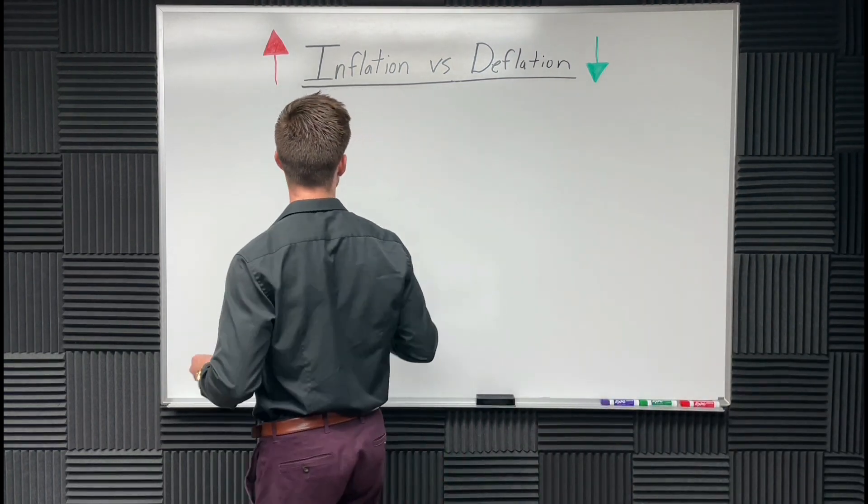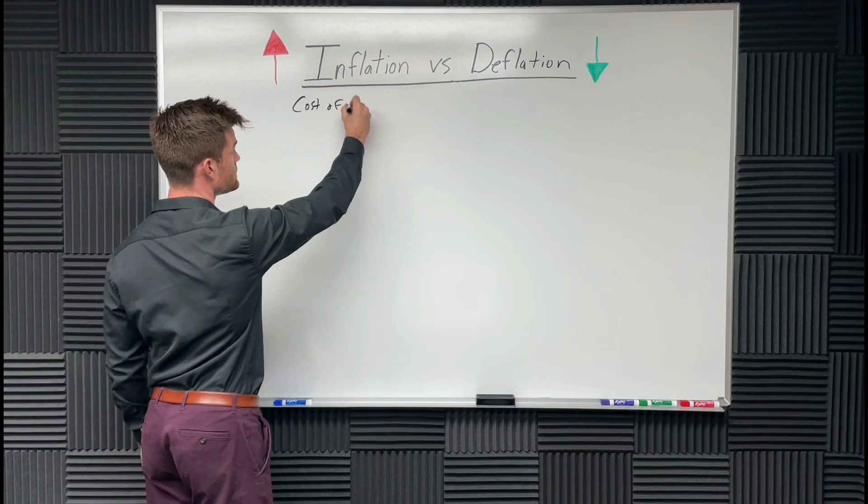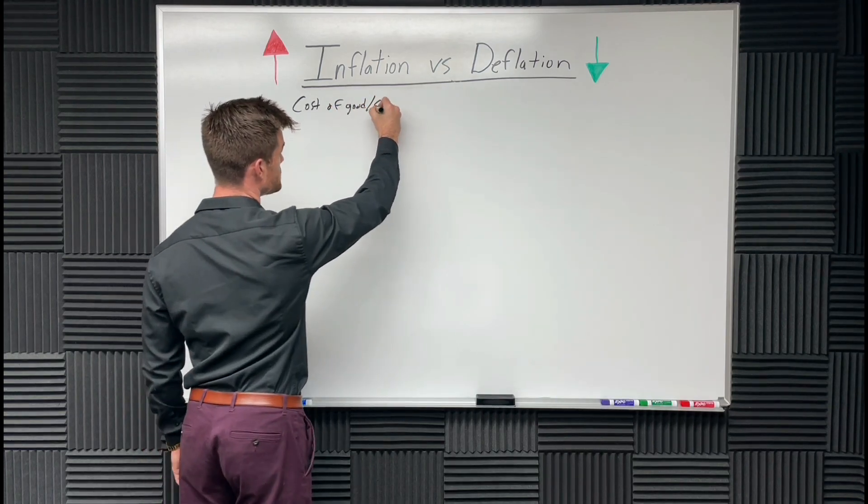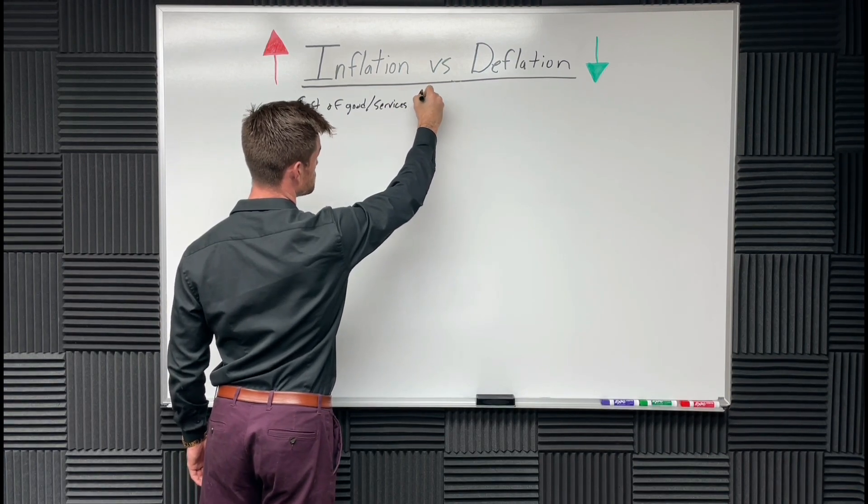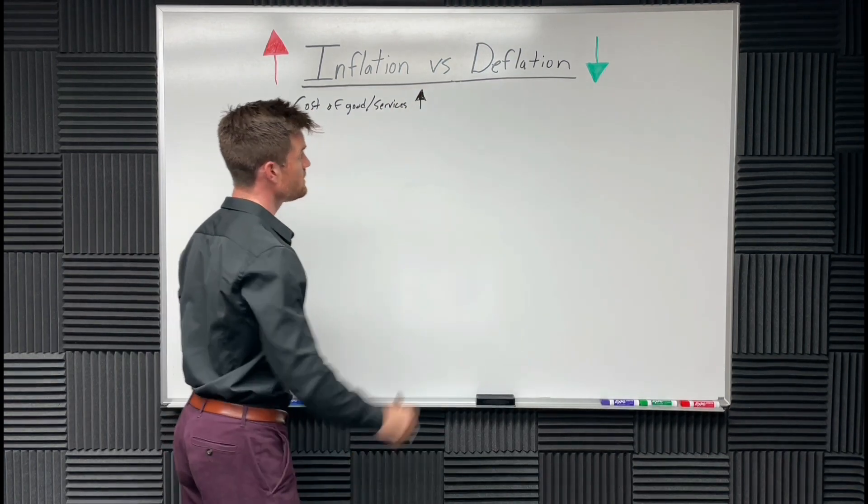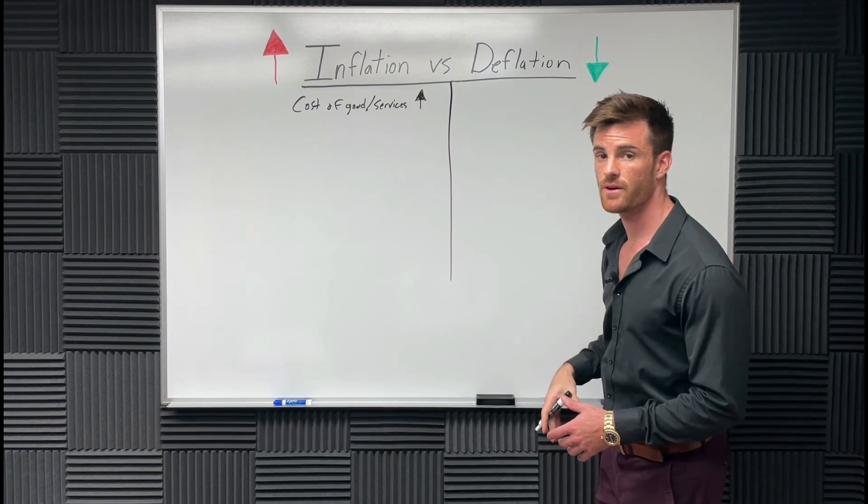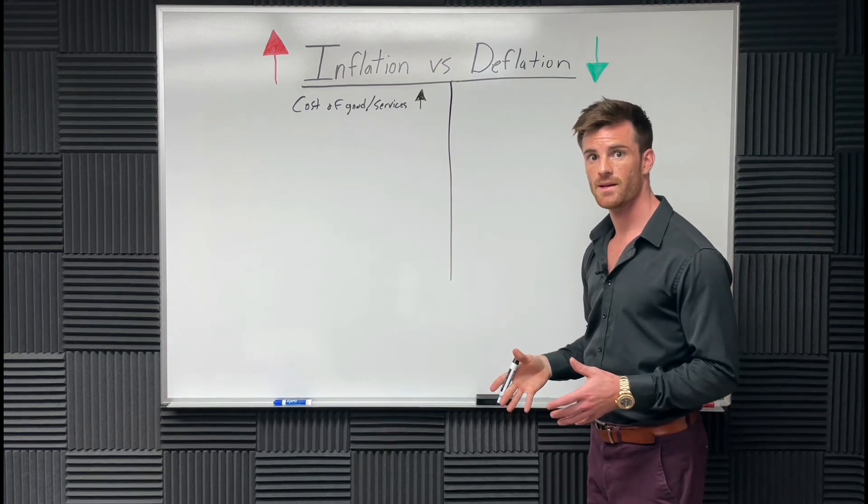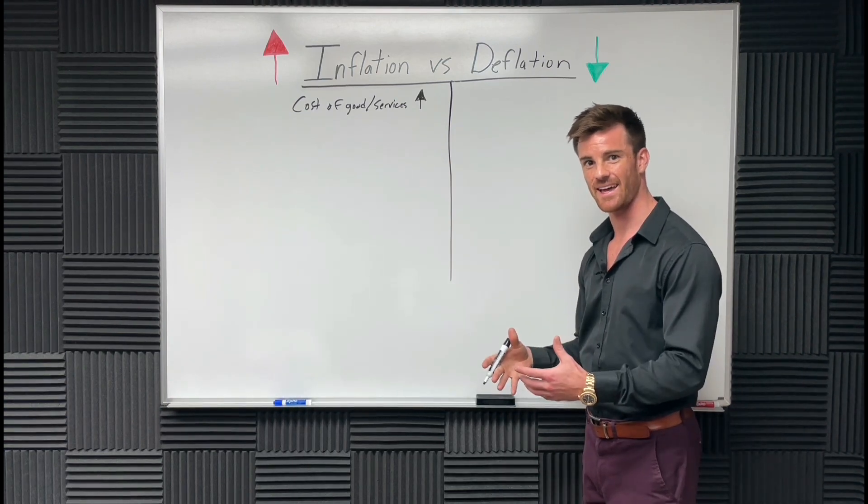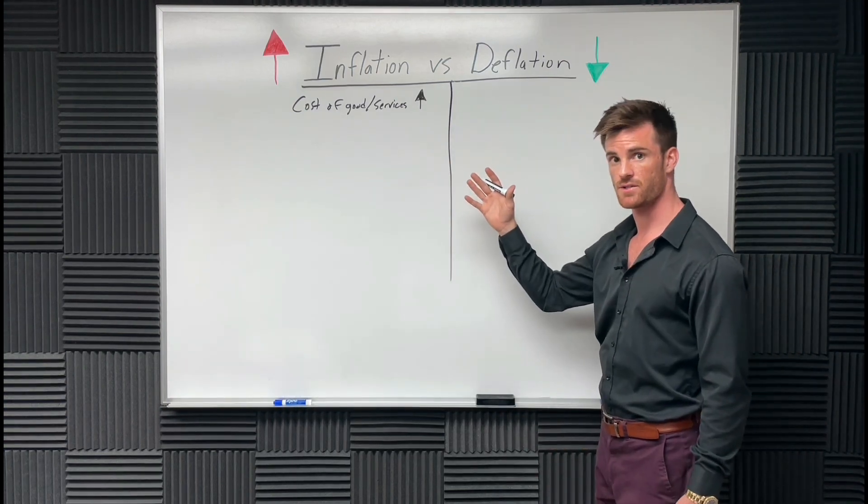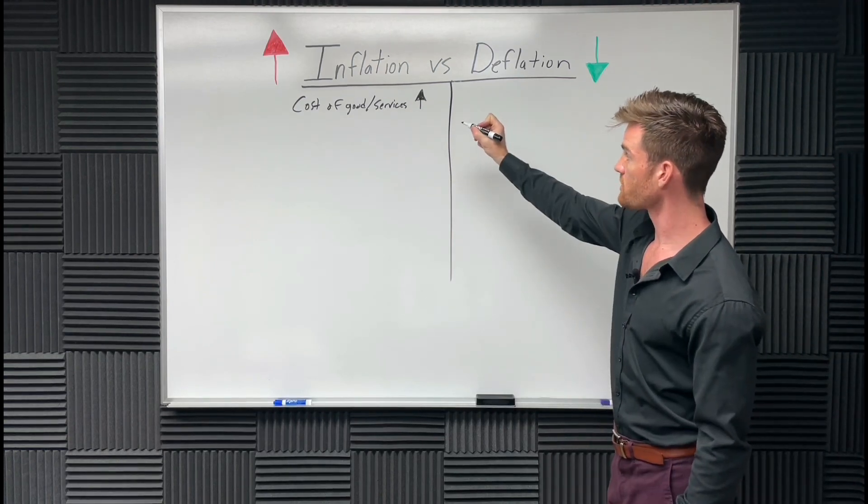Inflation is when the cost of goods and services goes up. Deflation. I'm going to break this down into a very simple form so the average working class can understand this and how it affects their day-to-day life. We're going to go over the broad definition first, then start getting into detail on how this affects you in a real way.